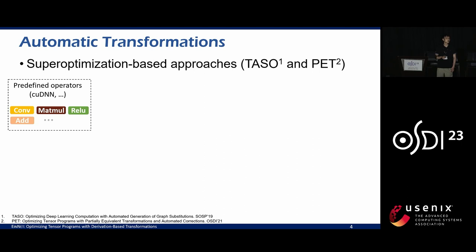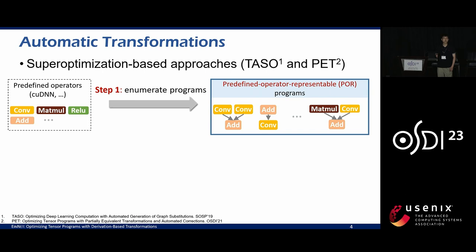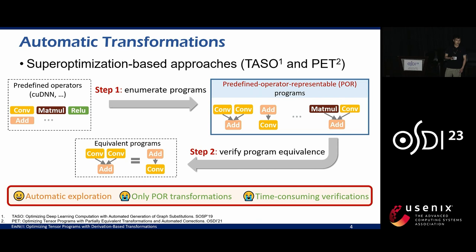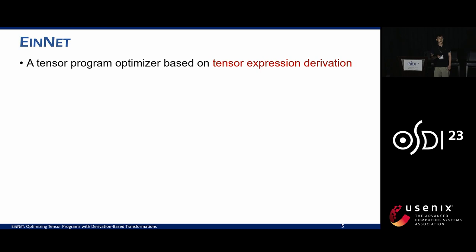The workflow has two steps. In the first step, it takes predefined operators such as convolution and matrix multiplication as input to enumerate programs. These programs consist of predefined operators, so we call them predefined operator representable programs. Then in the second step, it verifies all the programs to find equivalent ones. The strength of this approach is that it can automatically find more transformations, but it has a limited optimization space consisting only of transformations with predefined operators, and it also requires time-consuming verification.